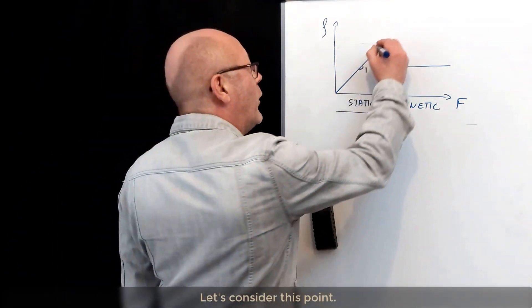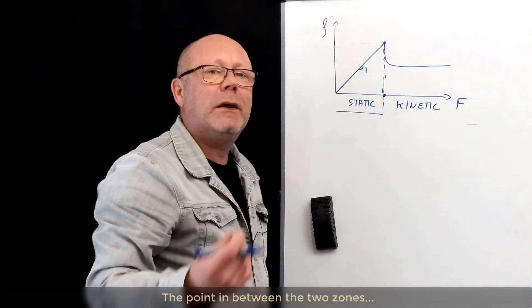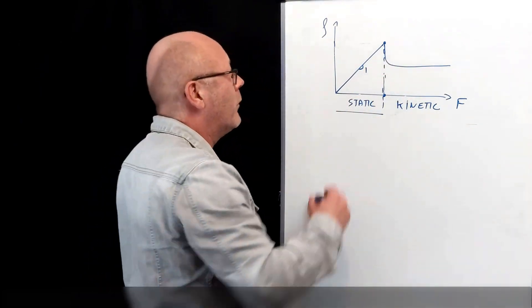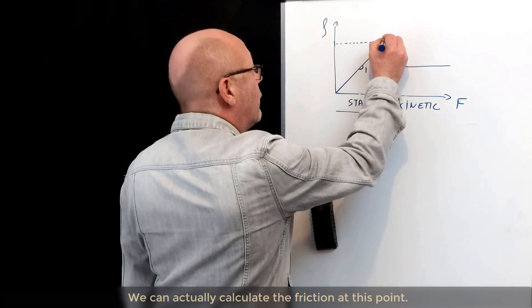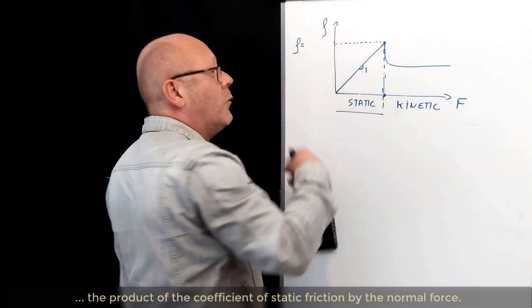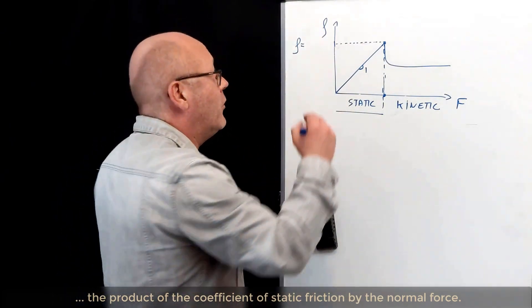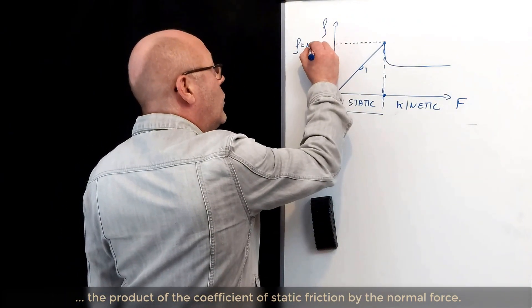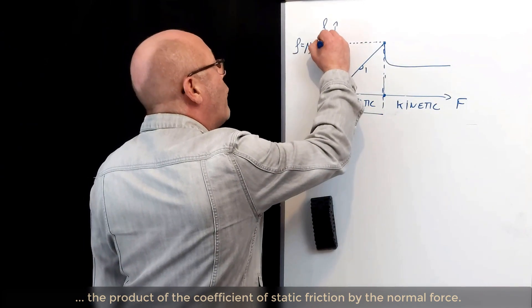Let's consider this point, the point in between the two zones. We can actually calculate the friction at this point. The friction at this point will be equal to the product of the coefficient of static friction, written mu s, by the normal force.